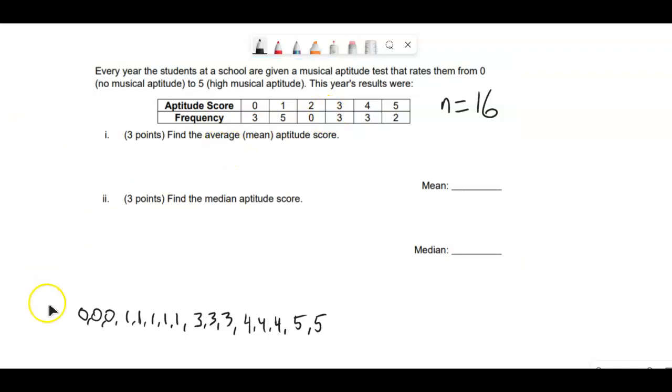So to find the mean, we have to add all of these up and divide by sixteen. The fast way to do this is just to do the product of the frequency and the score. So this would be the numerator.